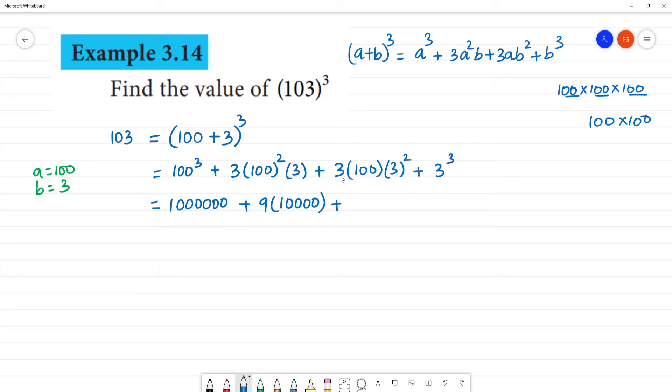Plus 300 multiplied by 3² which is 9, equals 2,700. Plus 3³, which is 3×3×3, equals 27.